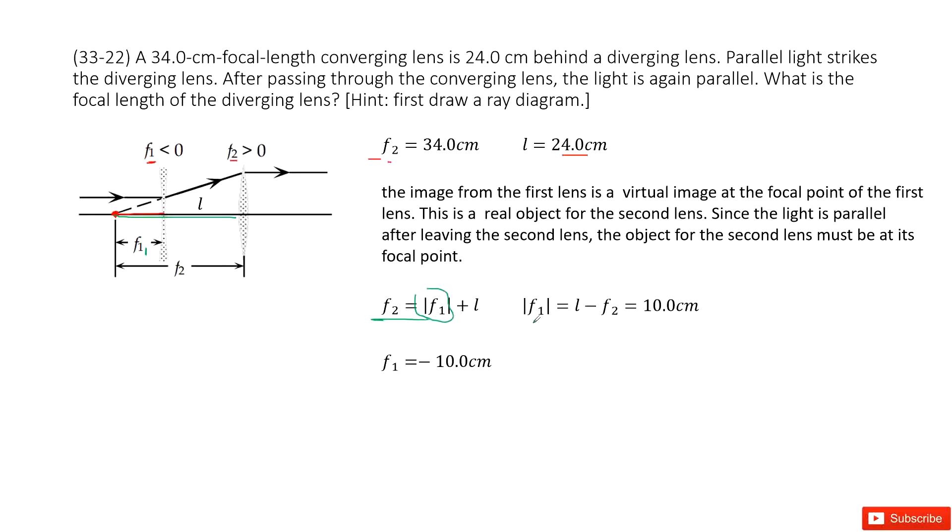Now we can do the calculation. Get absolute value for F1 as 10 cm. Then we see the F1 is negative. So it becomes negative 10 cm.